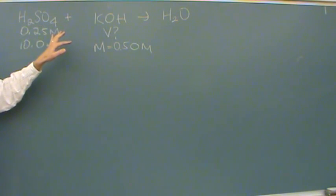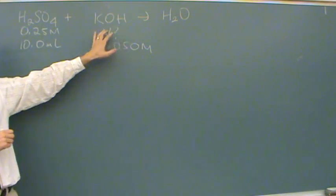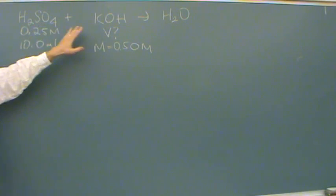How do we know these are acids and bases? There's an H in front, so that's an acid. OH in back, that's a base. This is a strong acid, that's a strong base.